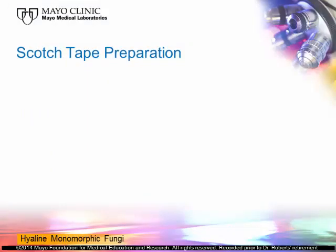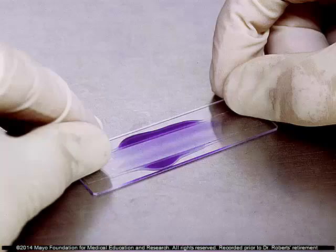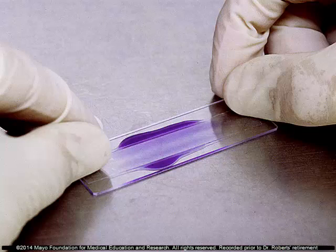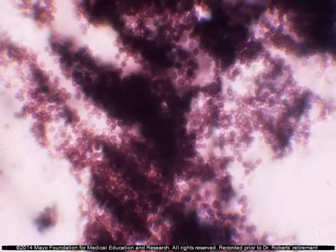The first preparation used in the clinical laboratory, and probably the most widely used, is the scotch tape preparation. Basically, you take a piece of scotch tape, fold it so the adhesive side is facing downward, and touch the colony with it. You stretch it out and place it on a slide that has a drop of lactophenol aniline blue on it. The scotch tape sticks to the slide and allows the fungus to be stained with the dye. One thing to note is that taking it from the very center of the colony — the oldest part — is where it sporulates most heavily.